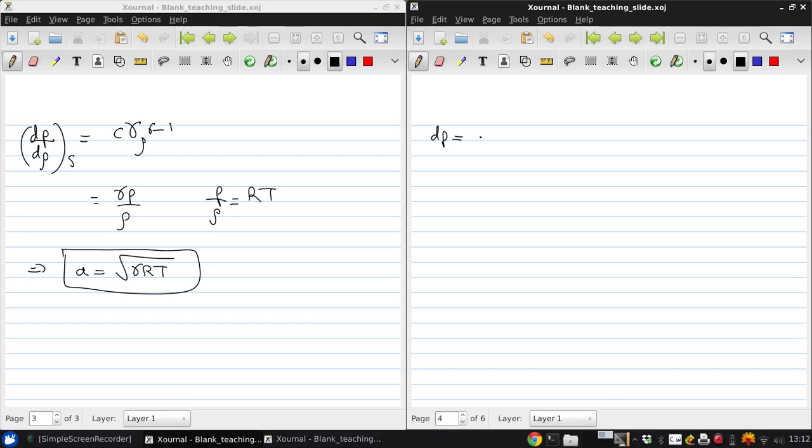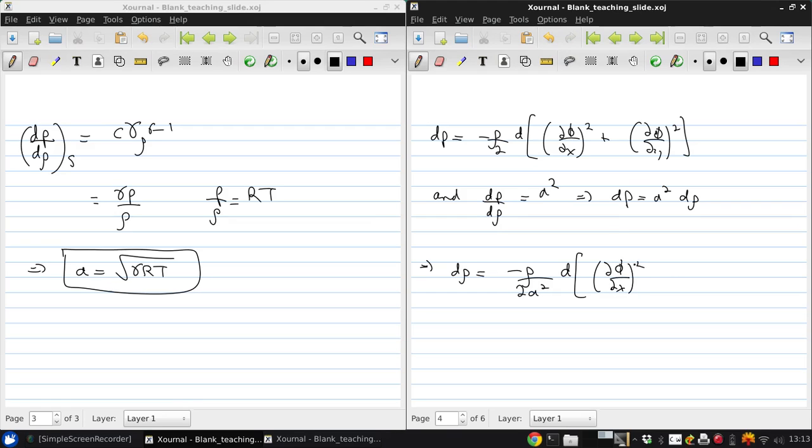So what we had was dp is negative rho over 2 times the differential of dp dx squared plus dy squared. And also that dp dx rho was the speed of sound squared where we can write that dp is speed of sound squared times dx rho. So then putting this together, we can get d rho is negative rho over 2a squared times the differential of our same term inside this bracket.